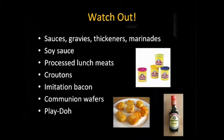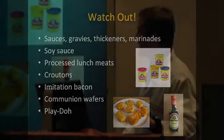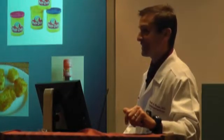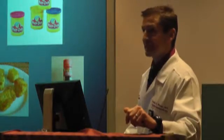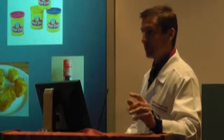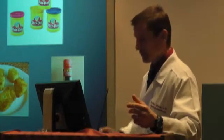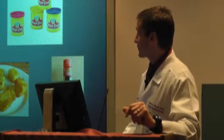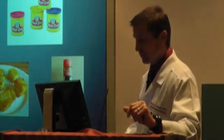Hidden gluten can be found in sauces, gravies, thickeners, marinades, soy sauce, processed lunch meats, croutons, bacon bits, and communion wafers. Also Play-Doh — not that you're eating it, but if your children have celiac disease and they're playing with Play-Doh and don't wash their hands before eating, they can actually get gluten from that. There are certain kids' clays that are gluten-free.